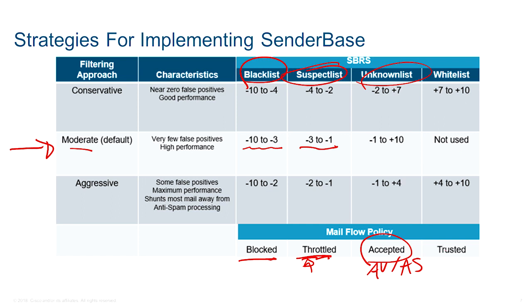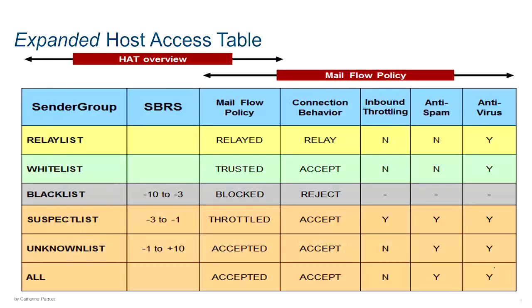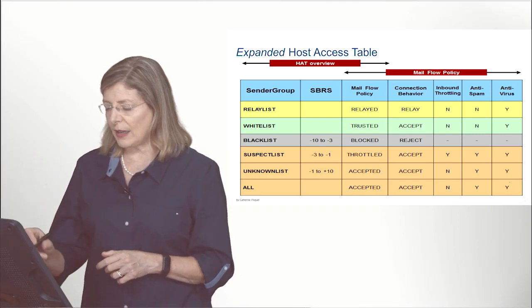There's also a whitelist, which is not used by default — you can manually assign someone to it, such as the domain of a business partner. When we whitelist a domain it goes under 'trusted,' which means we do not do dynamic anti-spam on it. We will nevertheless still do antivirus, but we will not dynamically try to check if the email is spam or not.